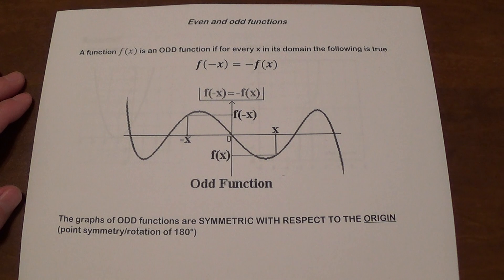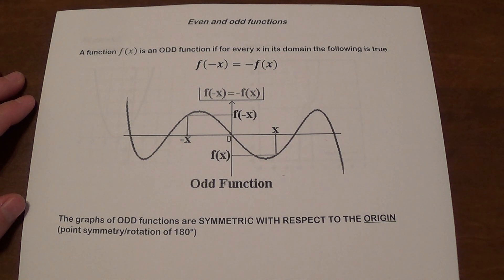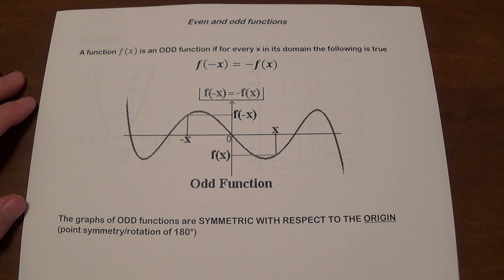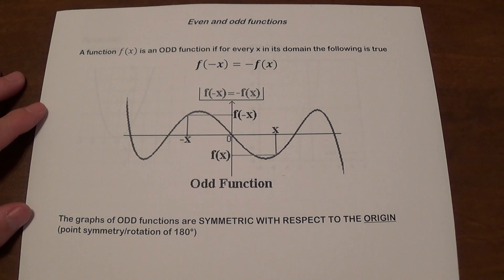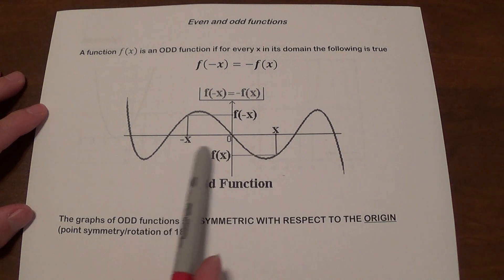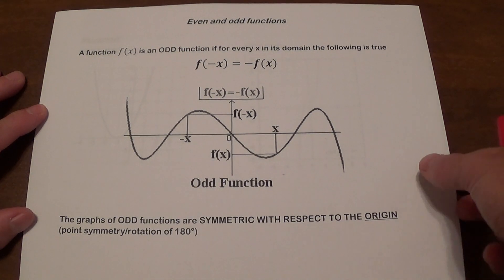Functions like that — their graphs are always going to be symmetric with respect to the origin. This is what we call point symmetry, or it can also be obtained by rotating 180 degrees. And the graph may look like this.